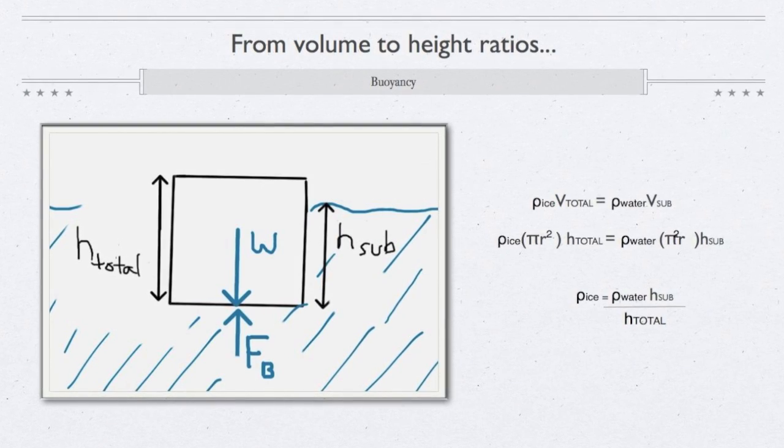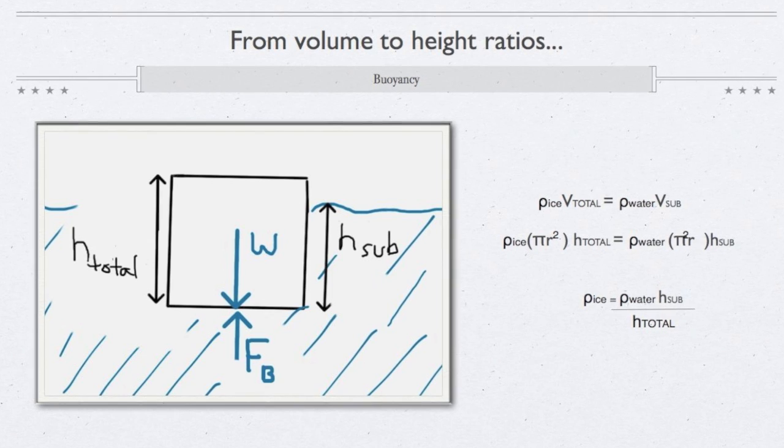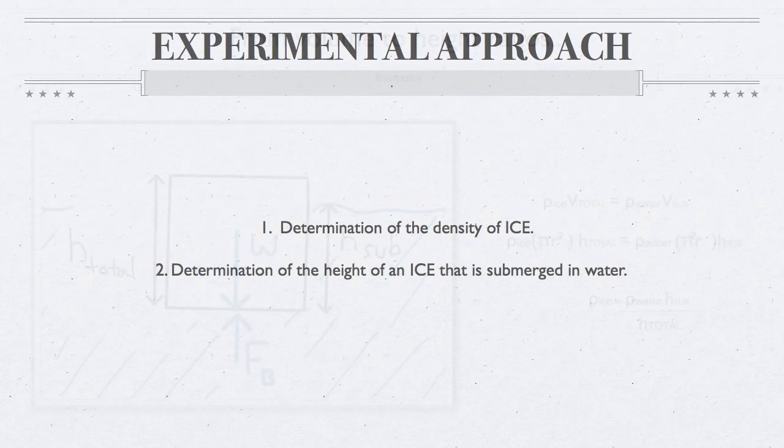Since the cross section of the ice block is constant, the volume ratio can be replaced by the height ratio of the submerged height of the body to its total height.